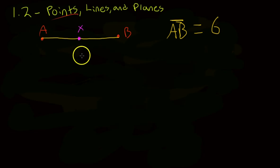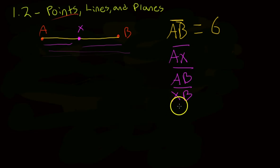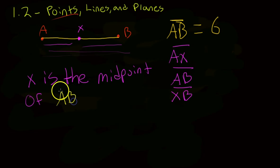Now, we really have three different segments, right? We have segment AX, we have segment XB, and we have segment AB. So, we have segment AX, we have segment AB, we have segment XB, or BX, whatever you want to call it. And now, what if I told you that X is the midpoint of segment AB?